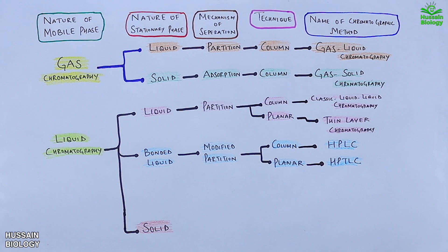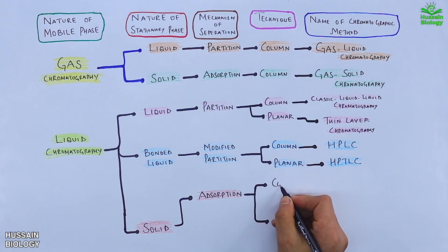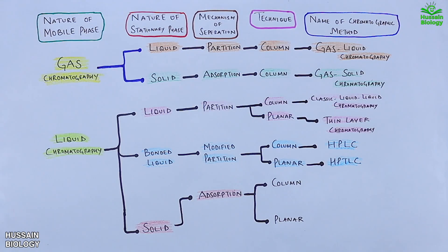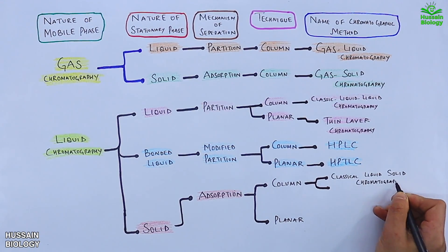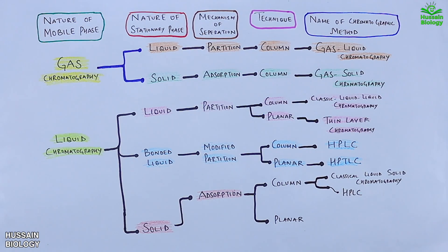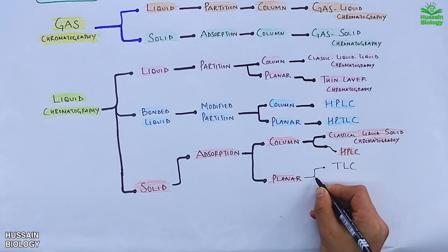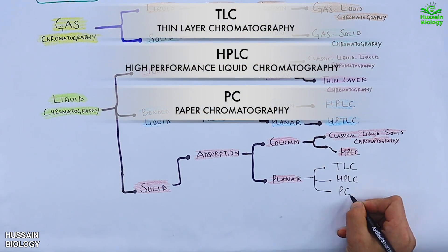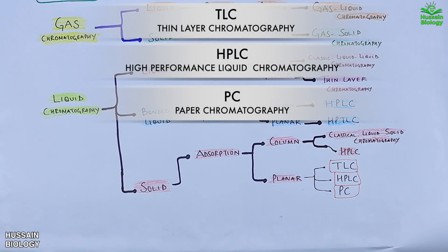Moving to solid stationary phase under liquid chromatography, which is classified into adsorption chromatography by mechanism of separation, and further classified technically into column and planar. In column chromatography it is named classical liquid-solid chromatography and HPLC. In the planar technique we have three common methods: TLC, HPTLC, and PC — that is paper chromatography.